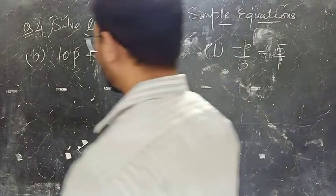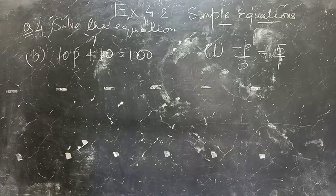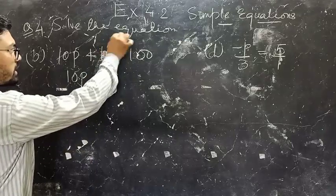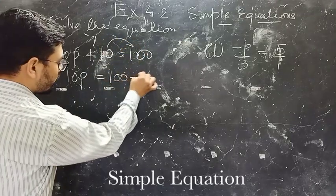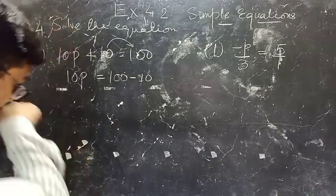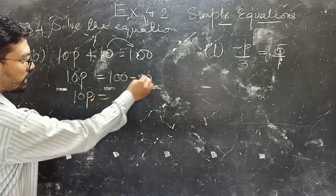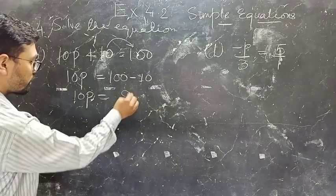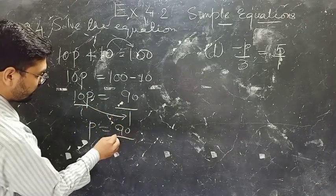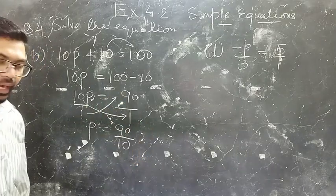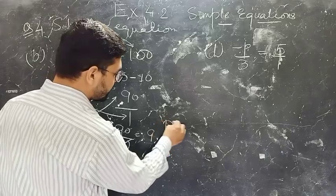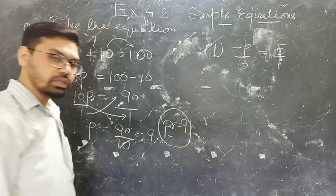Question 4, part P: 10P plus 10 equals 100. Take this 10 to the RHS — earlier it was plus 10, now it becomes minus 10, sign got changed. So 10P equals 100 minus 10, which is 90. Cross multiply the values: you get 90 divided by 10, and 10 nines are 90, so the value of P is 9.